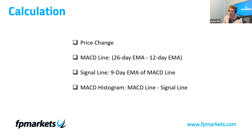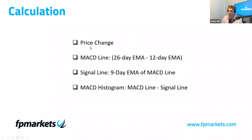Let's take a quick look at the calculation. For me, this is one of the simpler indicators to compute — certainly more straightforward than the RSI. The MACD is a derivative of price change. The MACD line is calculated as: 26-day EMA minus the 12-day EMA. This forms the MACD line. The signal line is then the nine-day EMA of the MACD line — it's a derivative of the MACD line, hence why the signal line is slower to react.